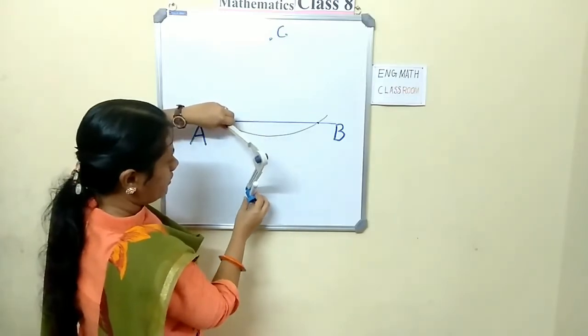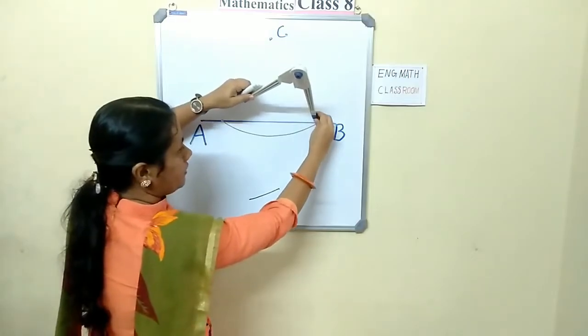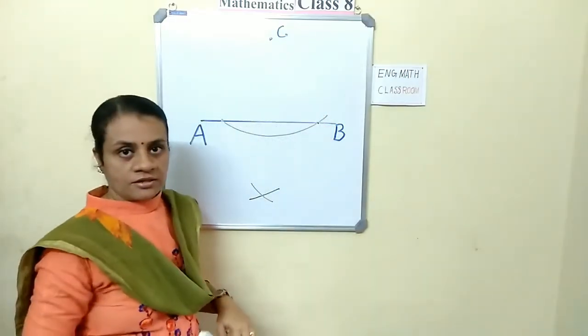Cut an arc downwards. And same distance. Do not change. Keep it here. And cut an arc here on the previous arc.